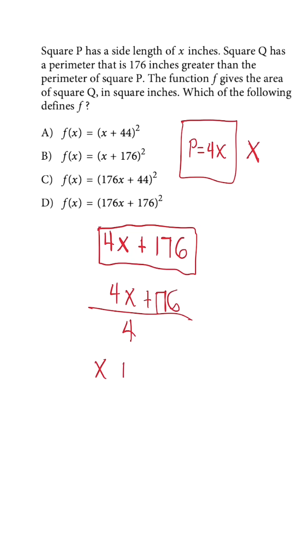Once we do that, we could say that one side length equals x plus 44. Remember that area is length times width. If we take this expression and we know with squares that all four sides are the same, we're just going to multiply. We could rewrite this as f(x) equals (x + 44) squared, meaning the correct answer choice would be answer choice A.